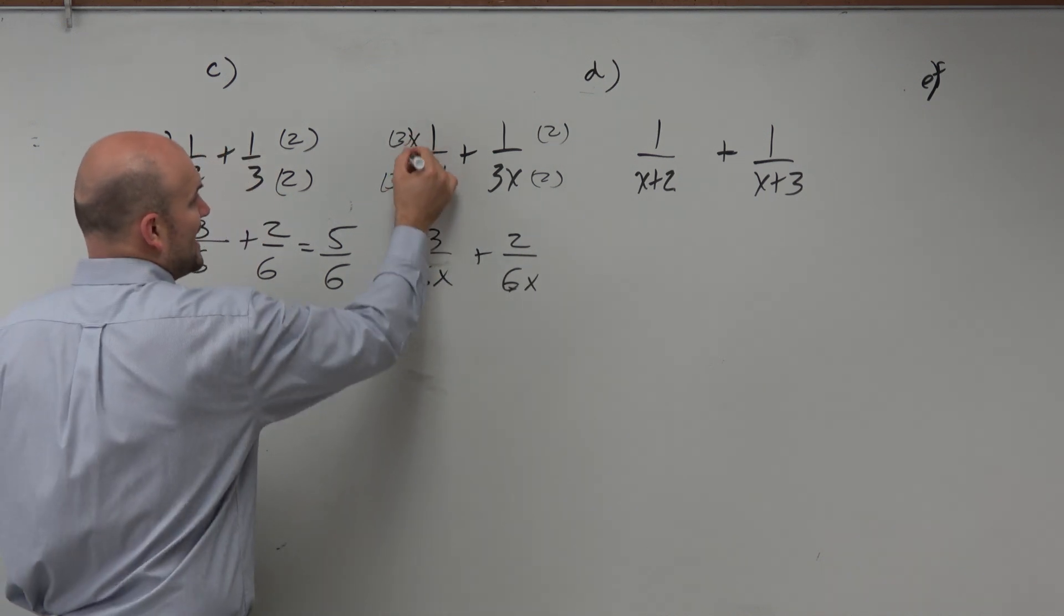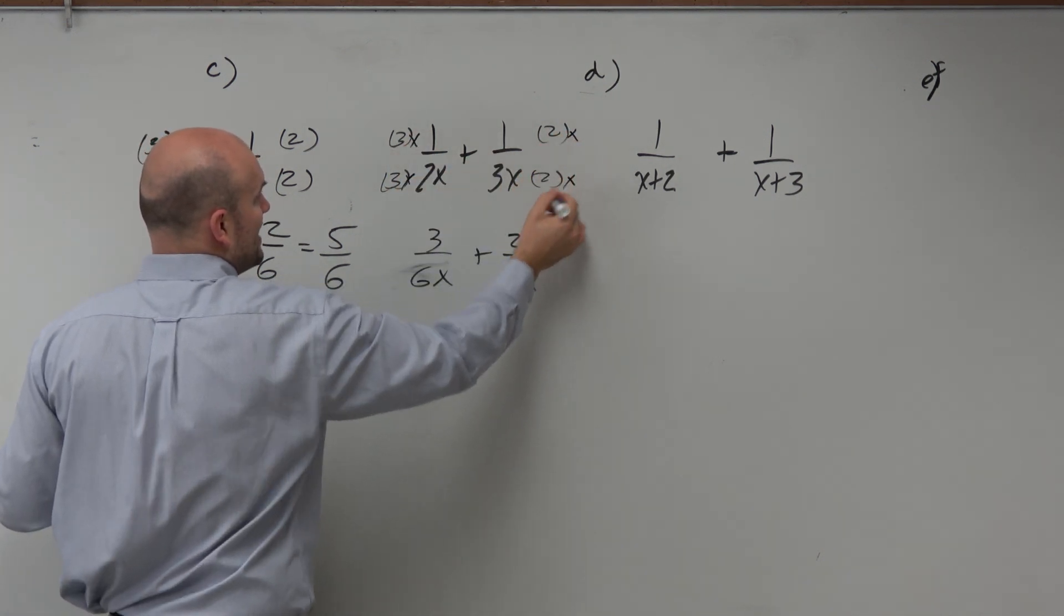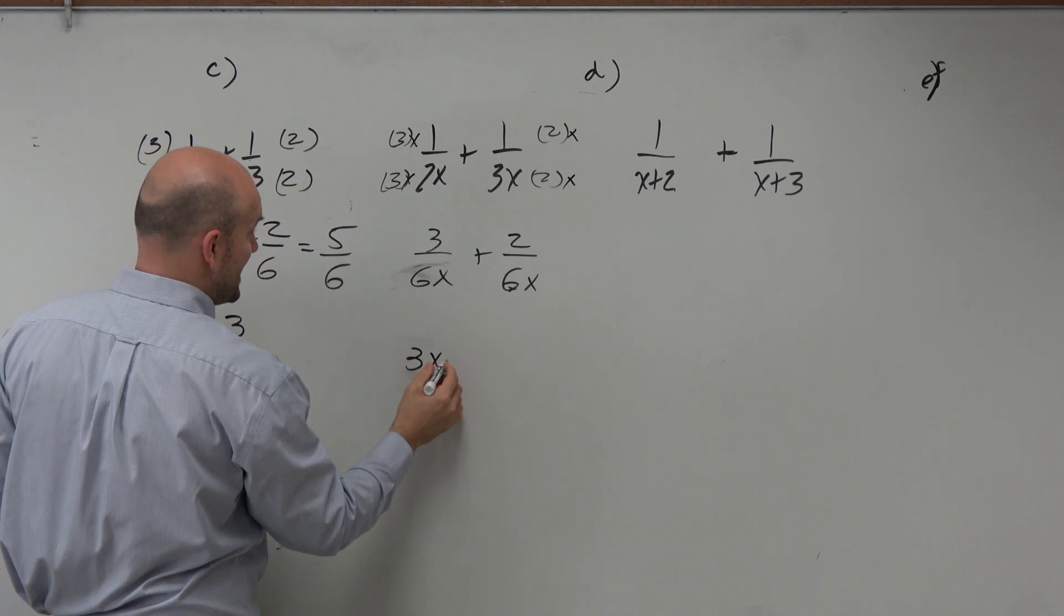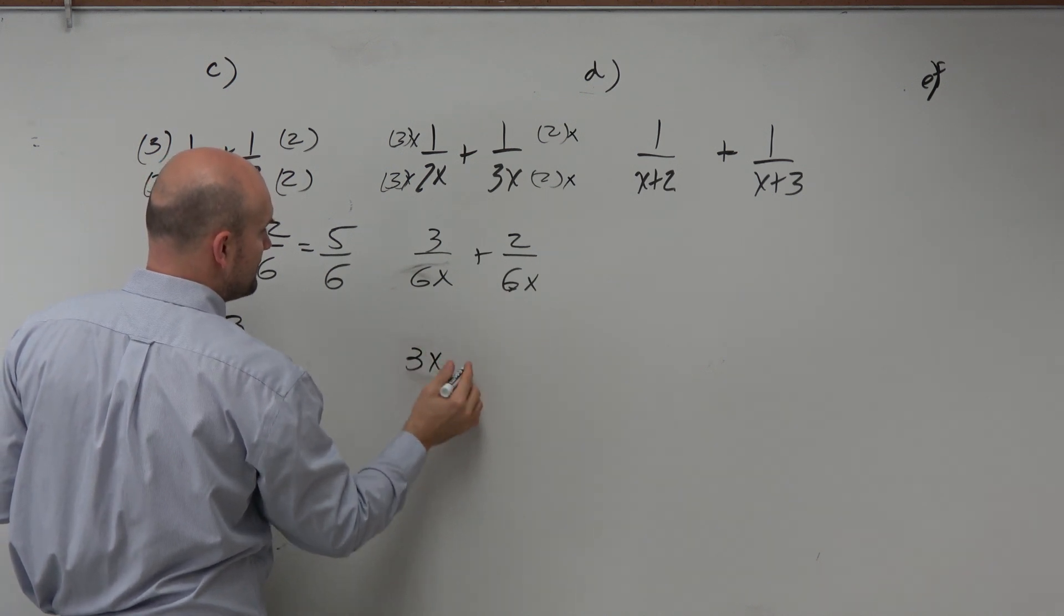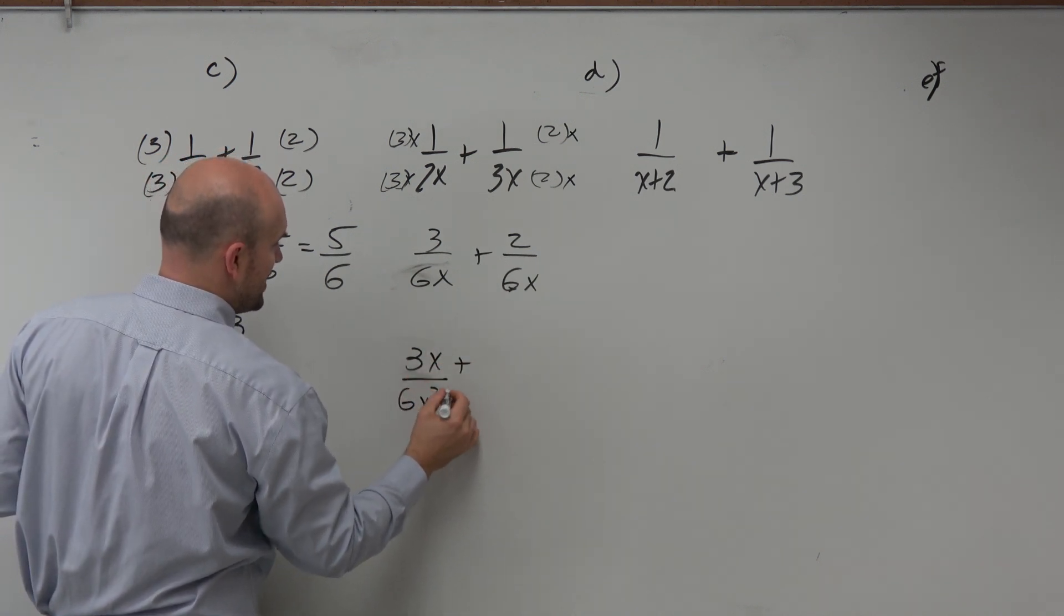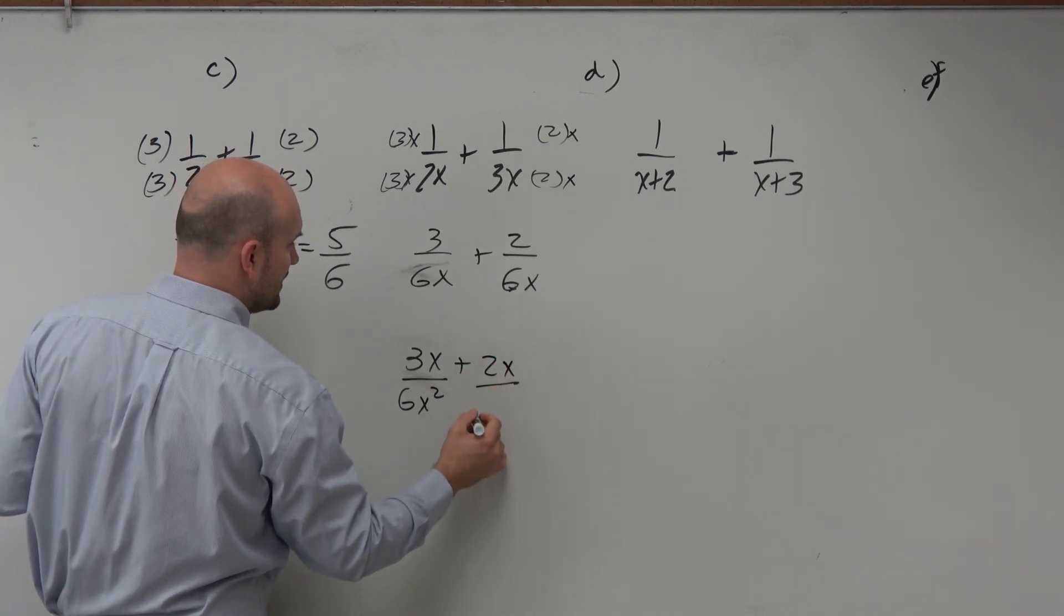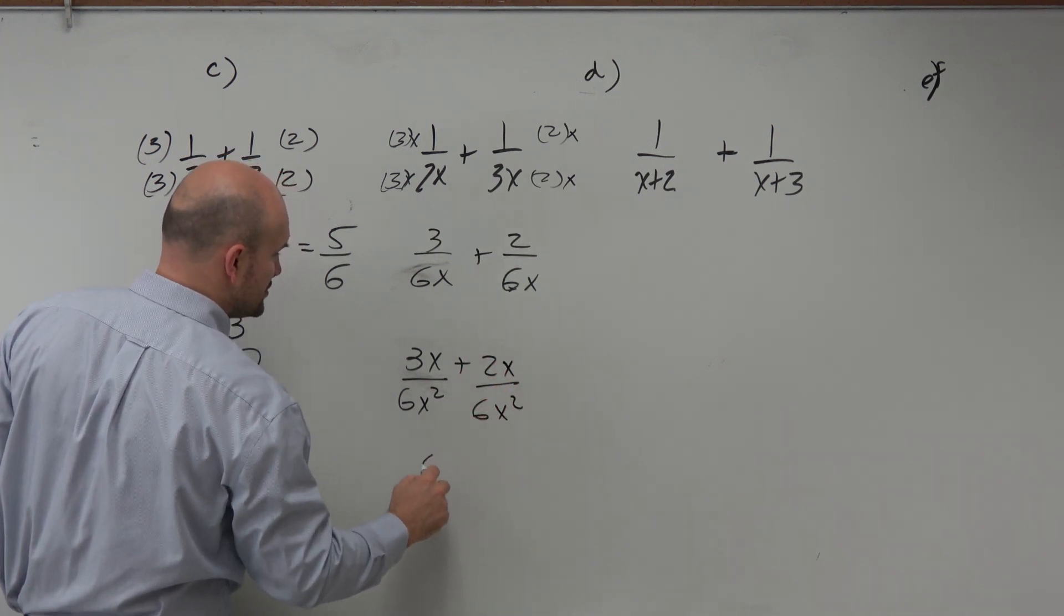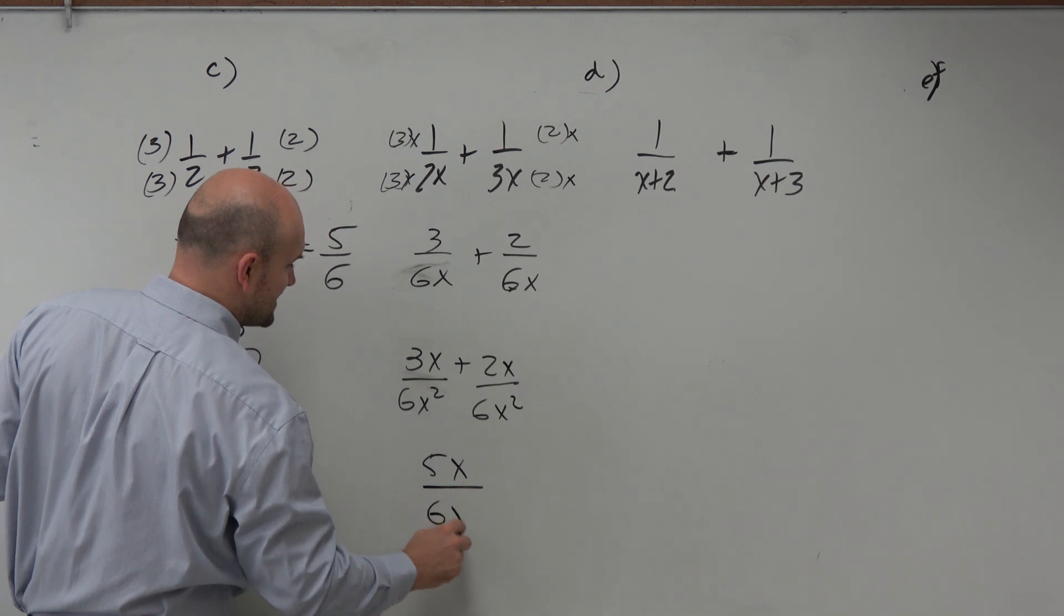If you did multiply by x over an x and a 2x over 2x, you'd now have a 3x over 6x squared plus 2x over a 6x squared. Which gives you a 5x over a 6x squared.